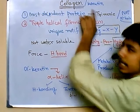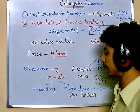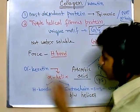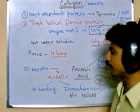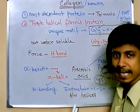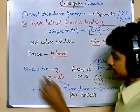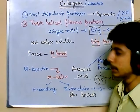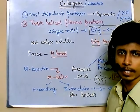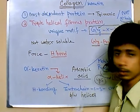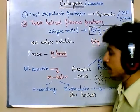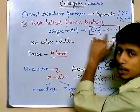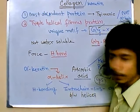Now, briefly about keratin — another fibrous protein. There are two types: alpha keratin and beta keratin. Alpha keratin is structured as an alpha helix, unlike collagen which is not. Alpha keratin is a dimeric protein — two different monomers wrap around each other to produce this keratin structure. So keratin is an alpha helix, while collagen is not.